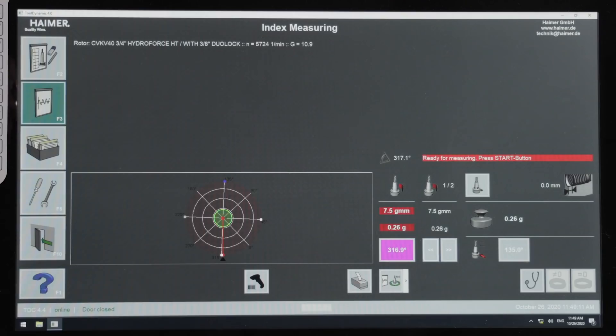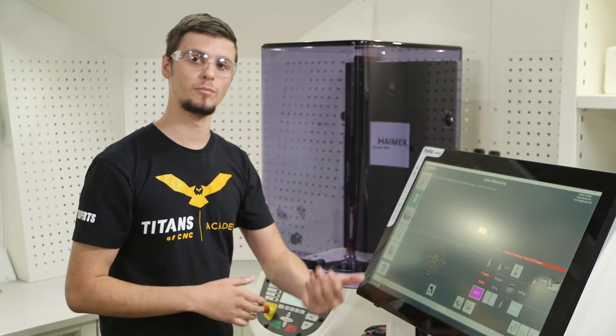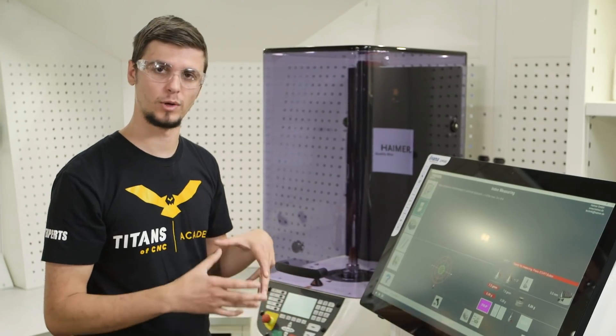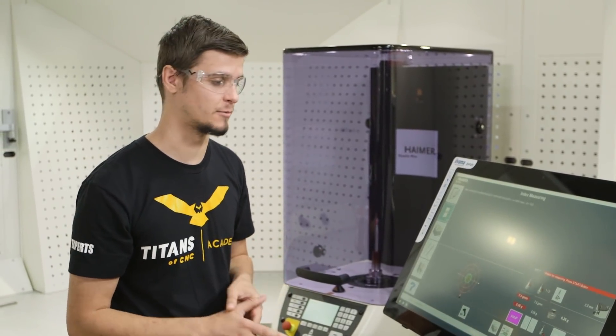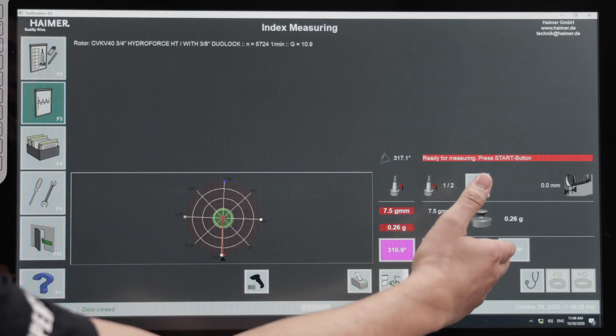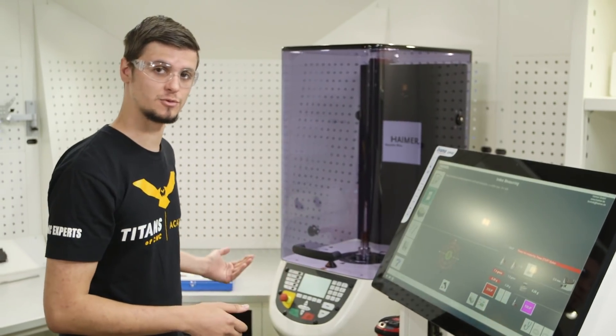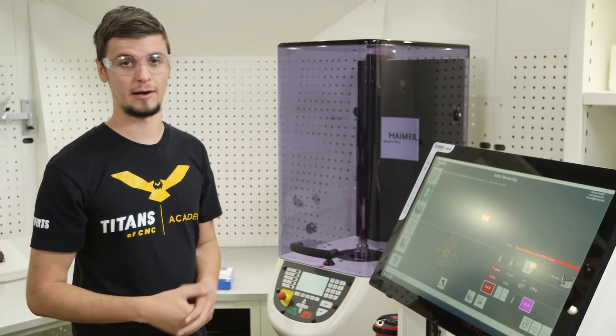We can go through and see exactly where we need to put weight and how much weight. We have two positions that we need to add weight to calibrate it and get it back to its 2.5g rating. Our first position is going to be at 135 degrees, where we will add 0.26 grams. I already have my screw placed out that is that appropriate weight. Now we'll add it.